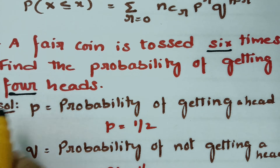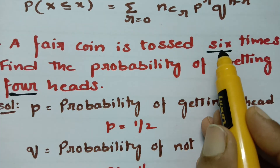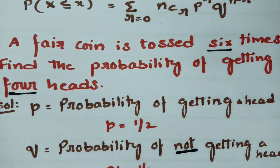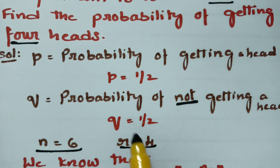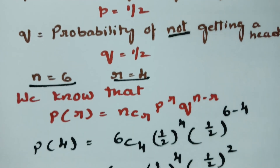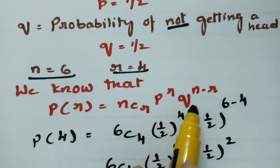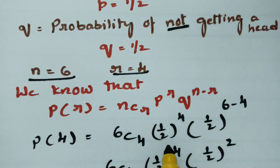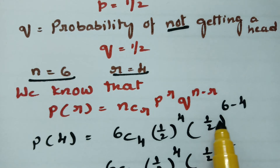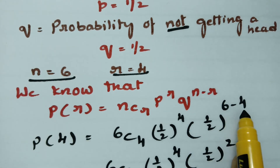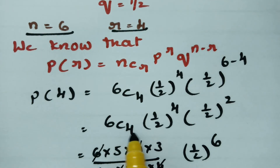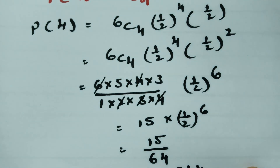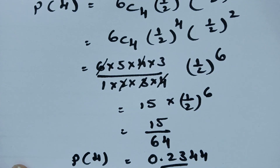To recap: a fair coin is tossed 6 times; find the probability of getting 4 heads. Here n = 6, r = 4, p = 1/2, and q = 1/2. Using the binomial distribution formula nCr × p^r × q^(n−r), we get 6C4 × (1/2)^4 × (1/2)^2 = 6C4 × (1/2)^6 = 15/64 = 0.2344. This is how we solve it.